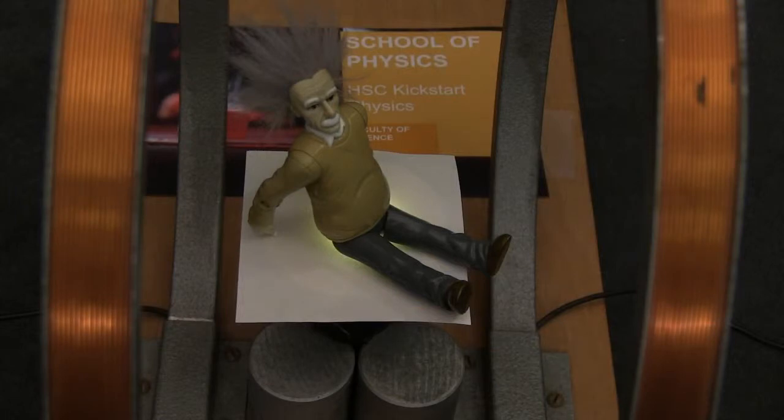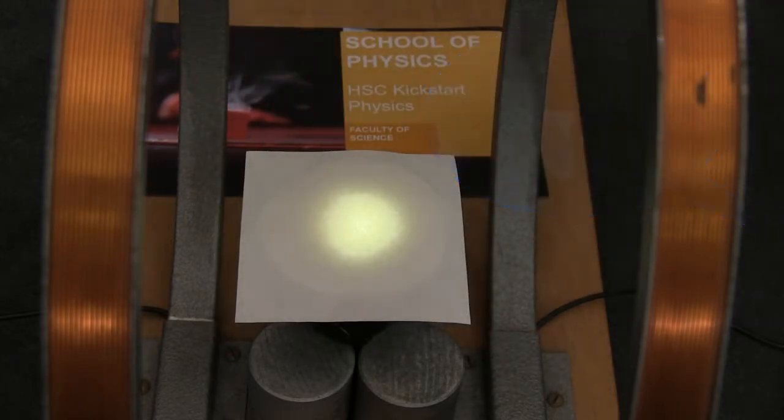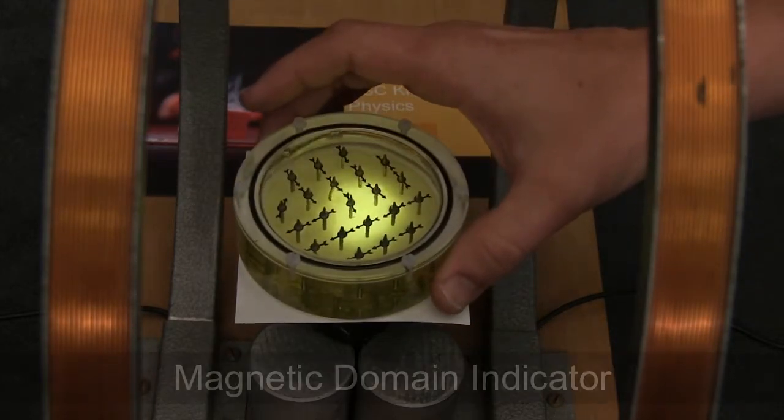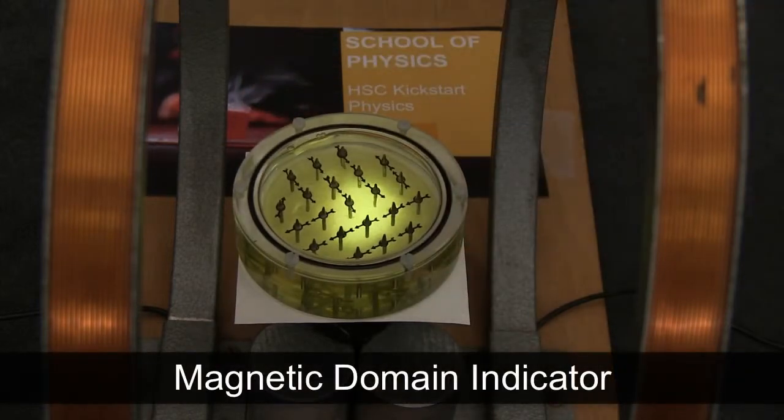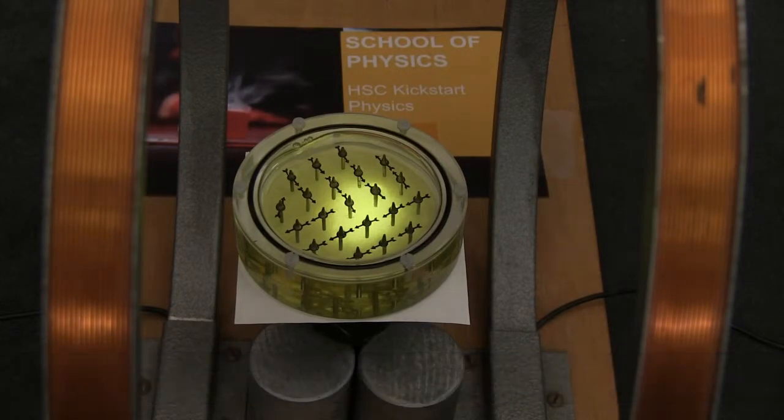Now for the demonstration of nuclear magnetic resonance, I'm going to have to remove our medical phantom first and introduce a magnetic domain indicator which is going to show us different materials in our body, or different tissues in our body, and how they react to the magnetic field in a Helmholtz coil of a magnetic resonance imaging machine.